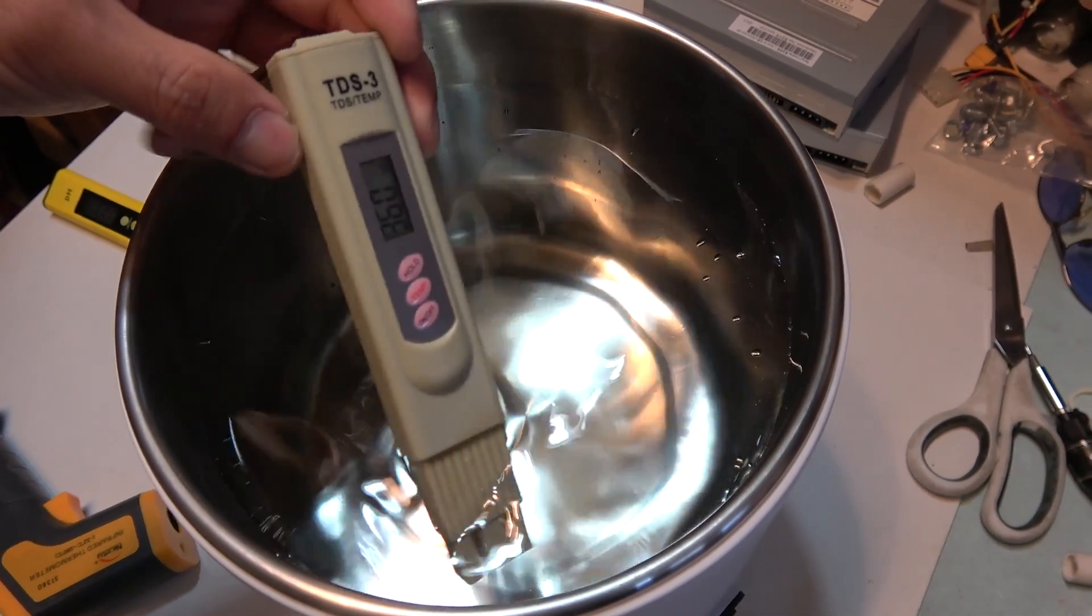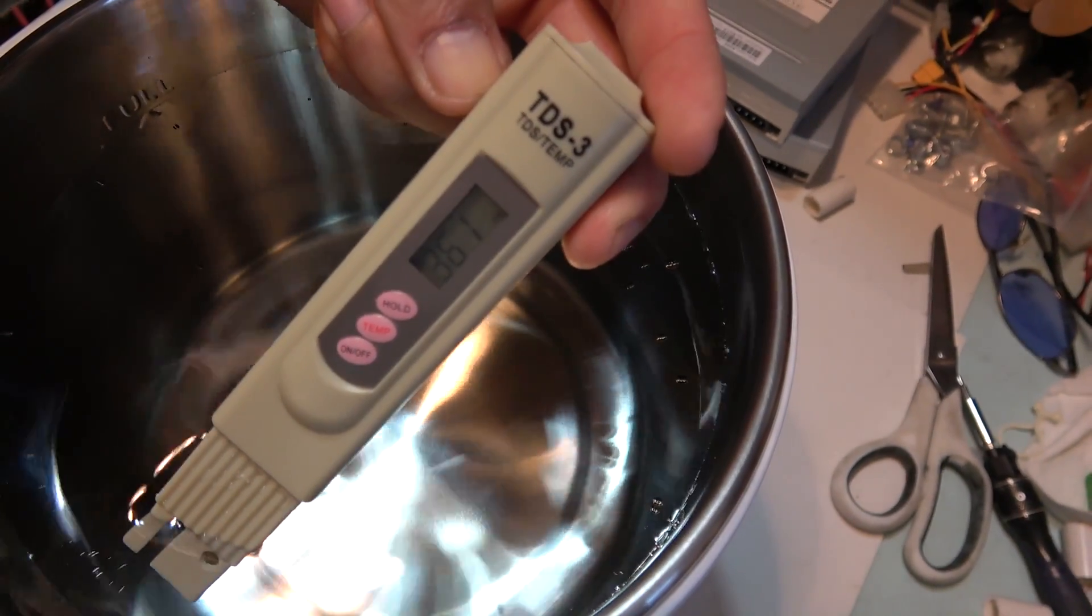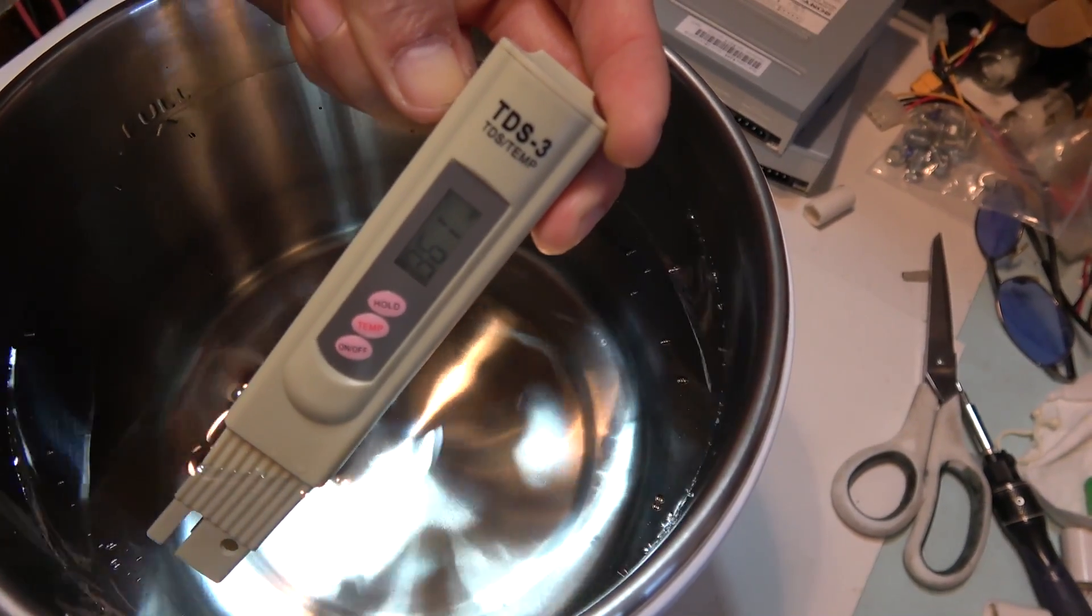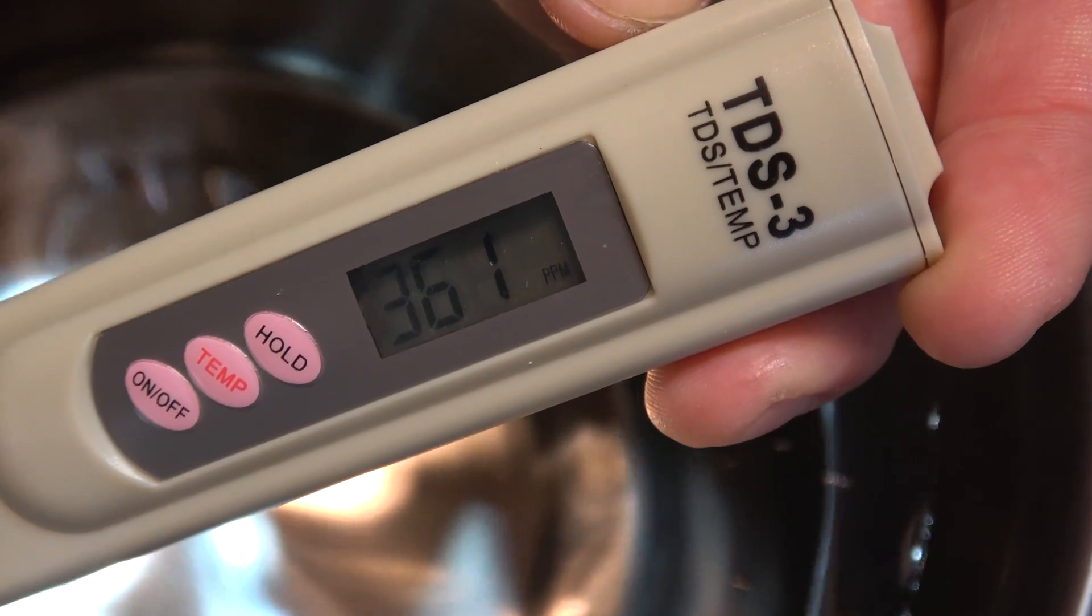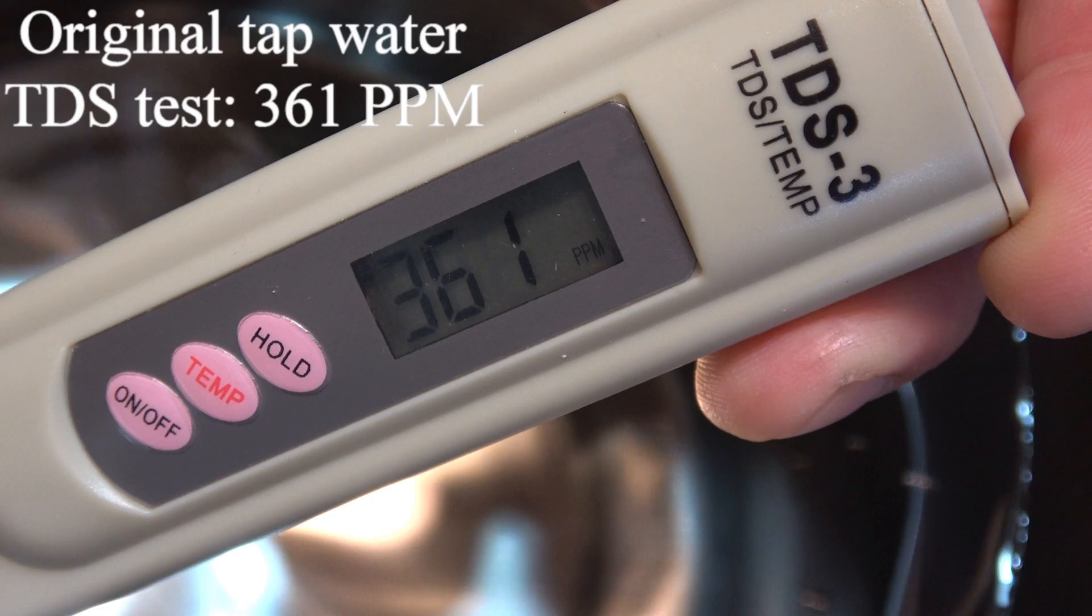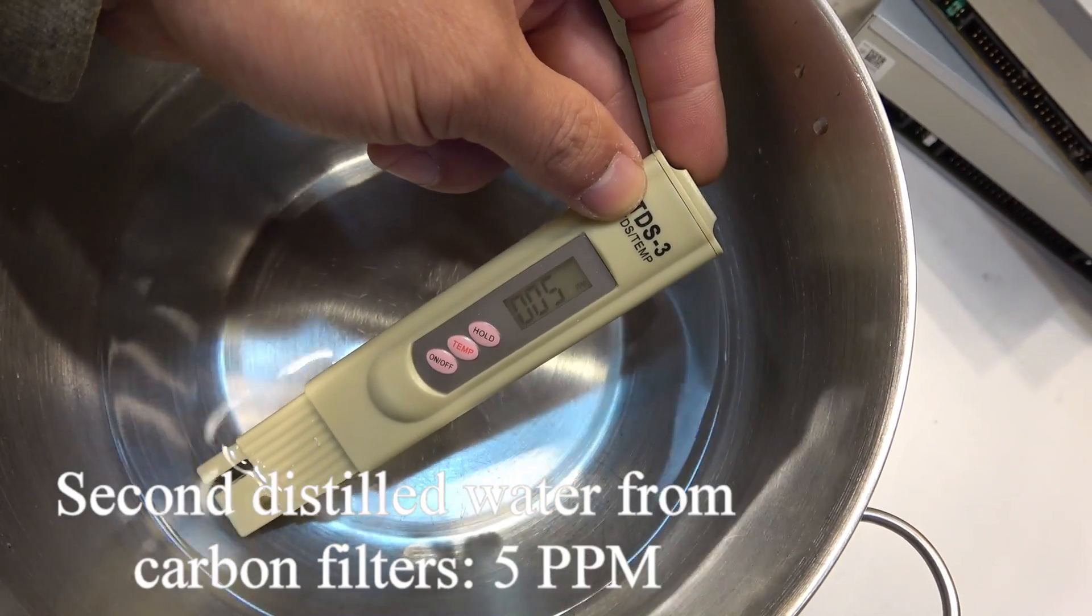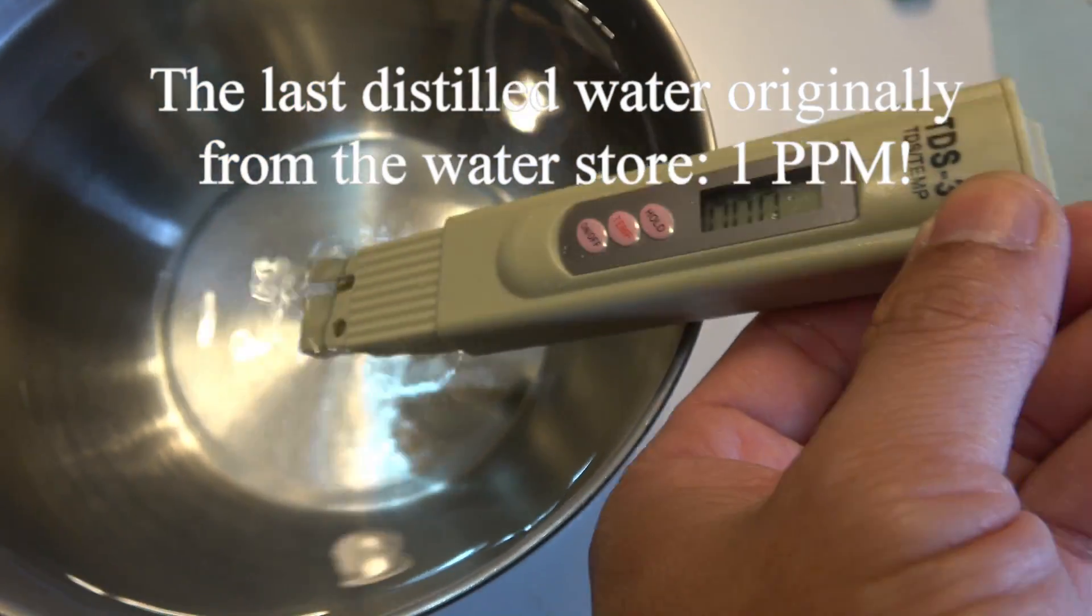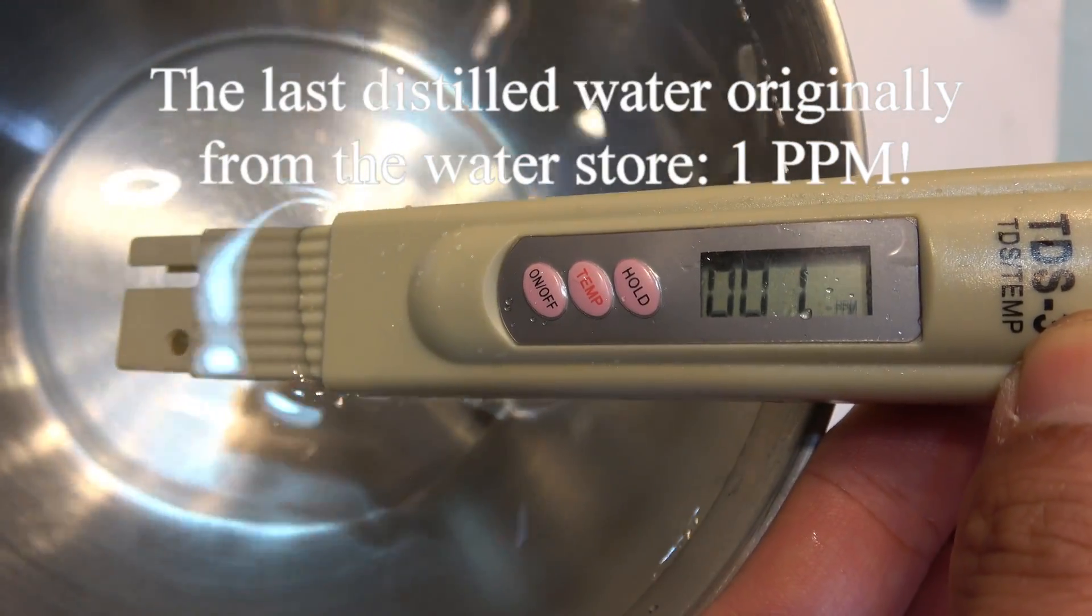During the four trials, I also used a TDS meter to measure and compare the quality of the distilled water. TDS stands for total dissolved solids, and it measures the charged ions in water as impurity and other salts in parts per million. The original tap water was about 300 parts per million. The distilled water after the distillation process was almost zero parts per million, especially the water I distilled that was originally from the water store. It had one part per million.